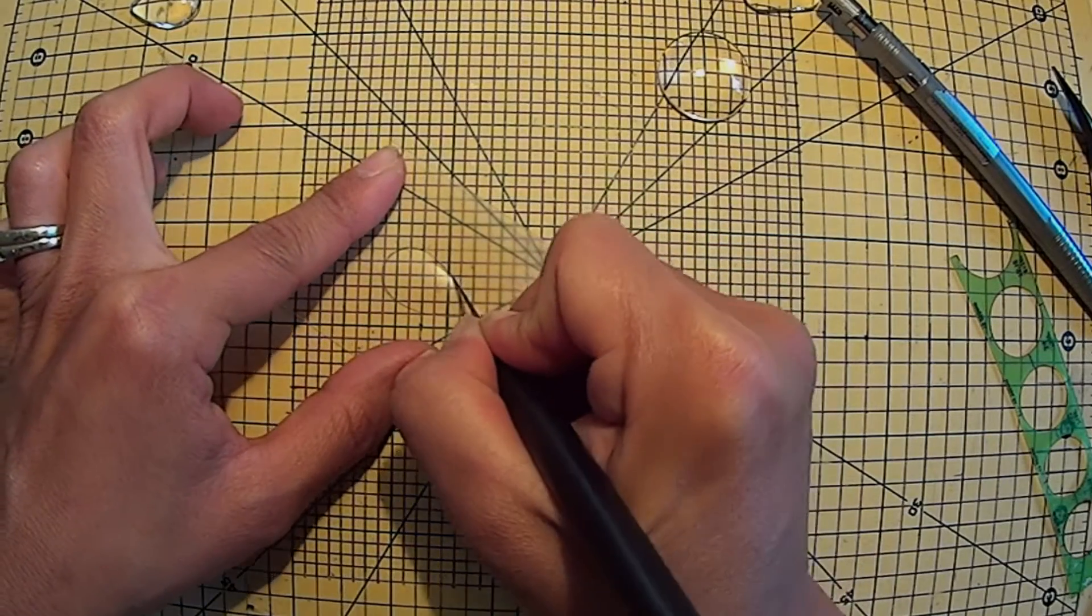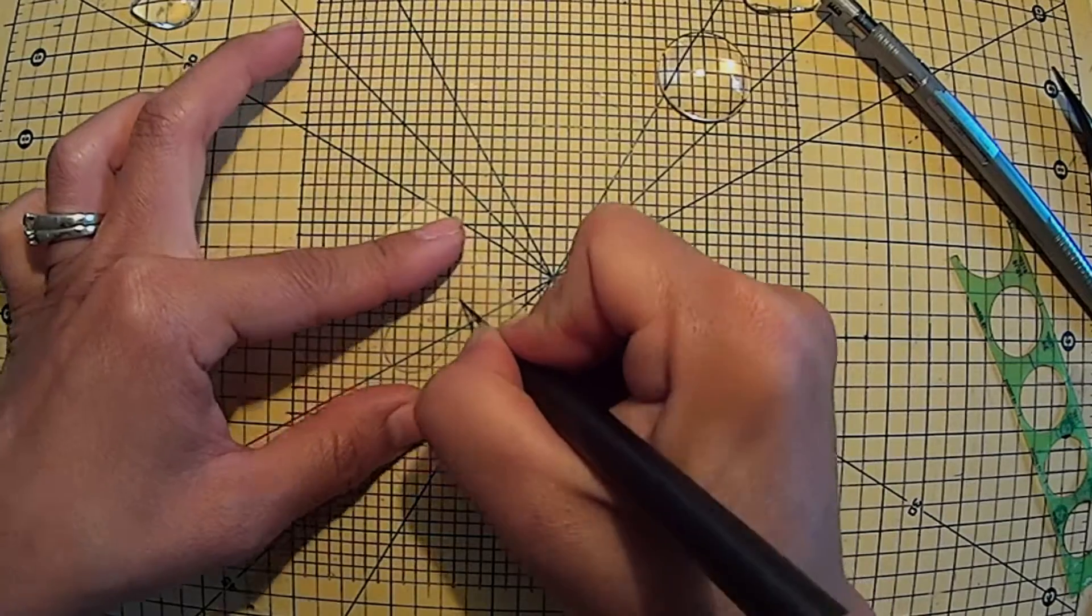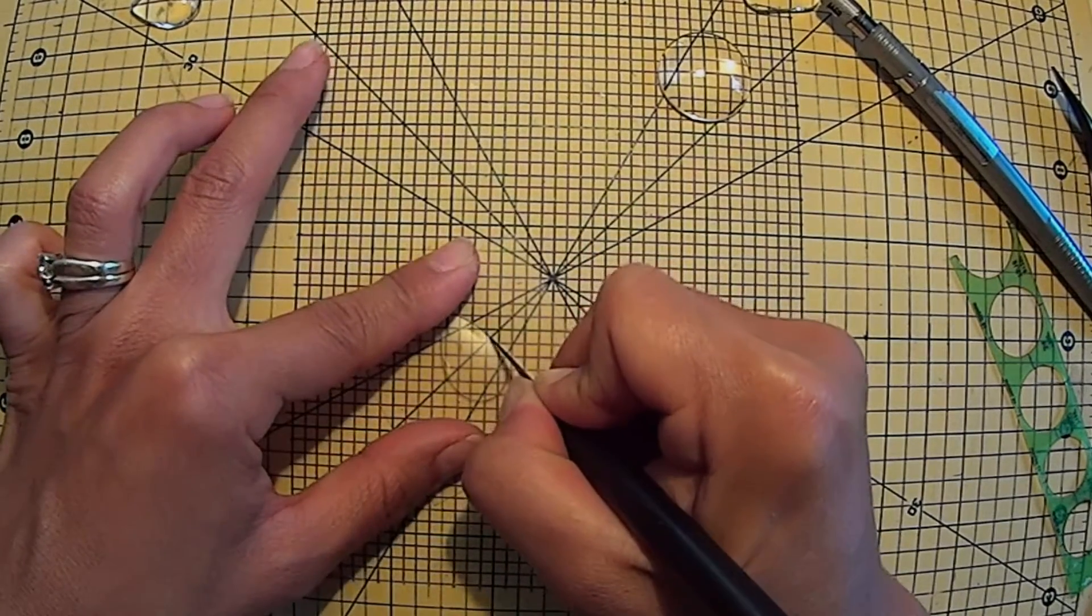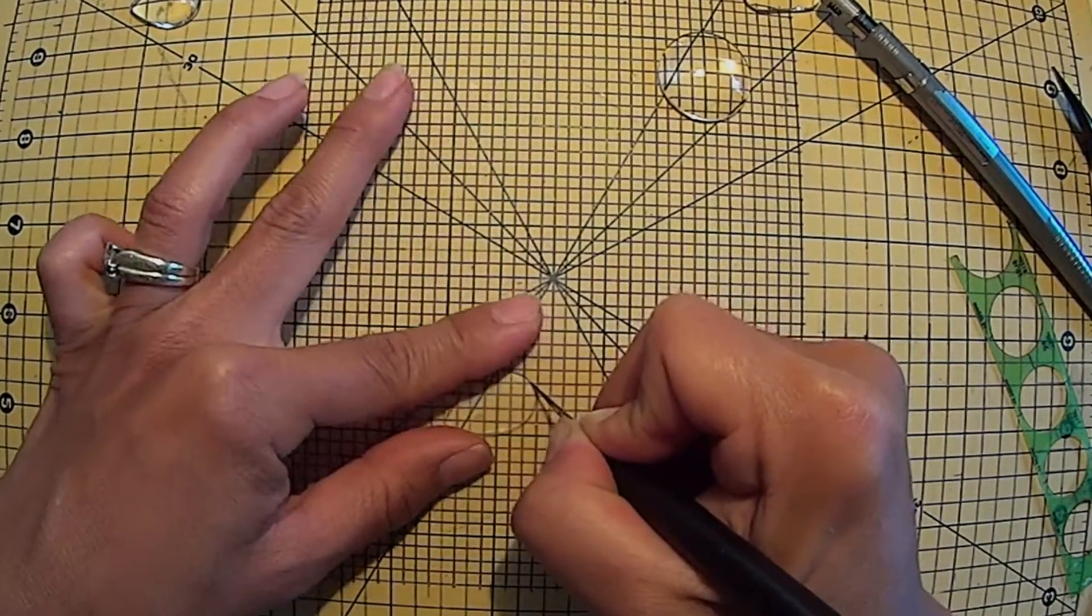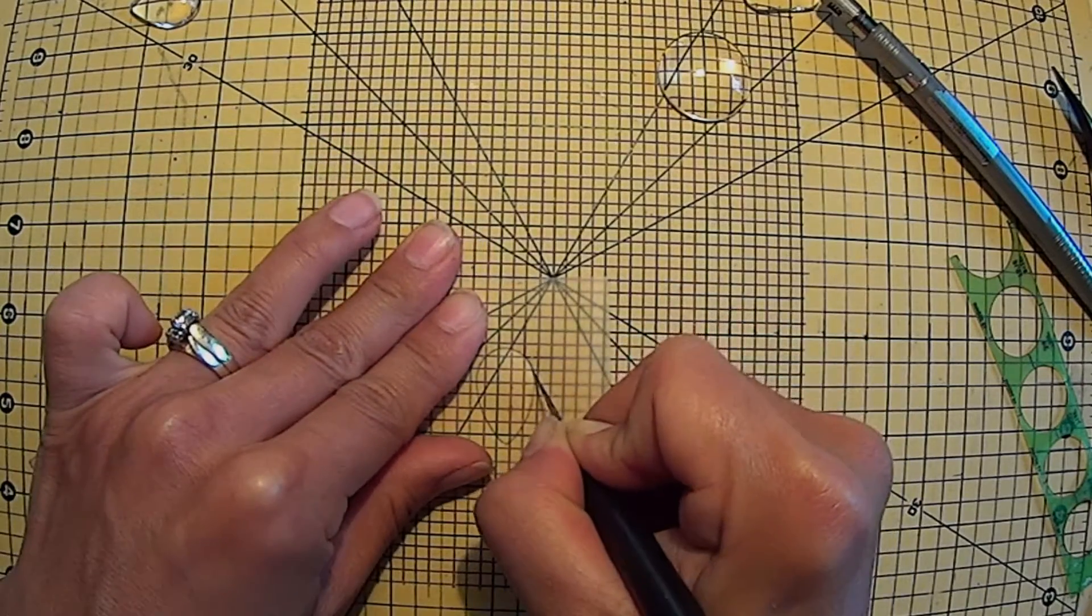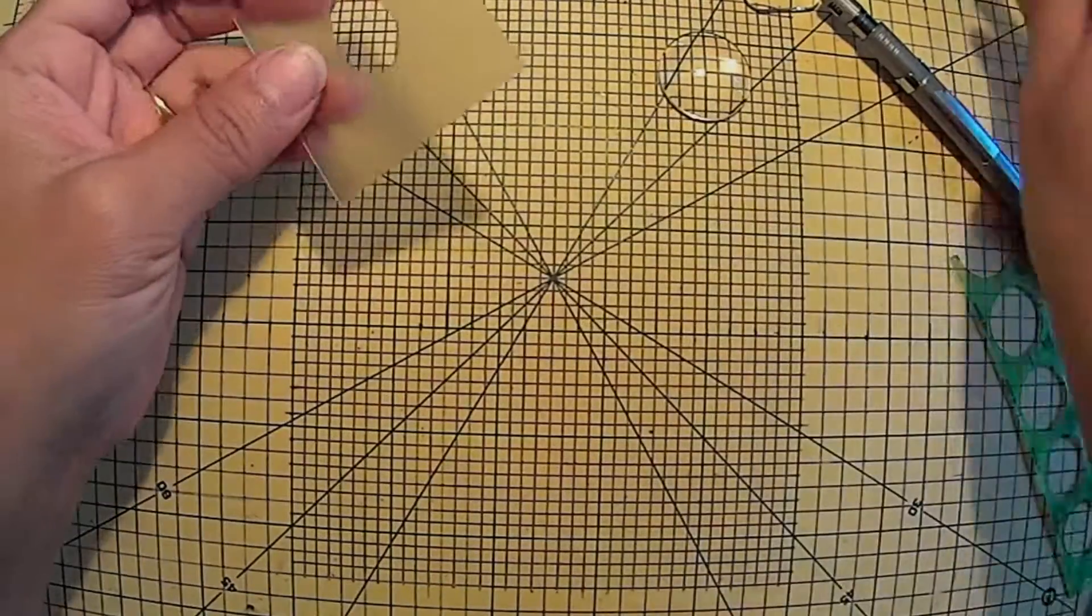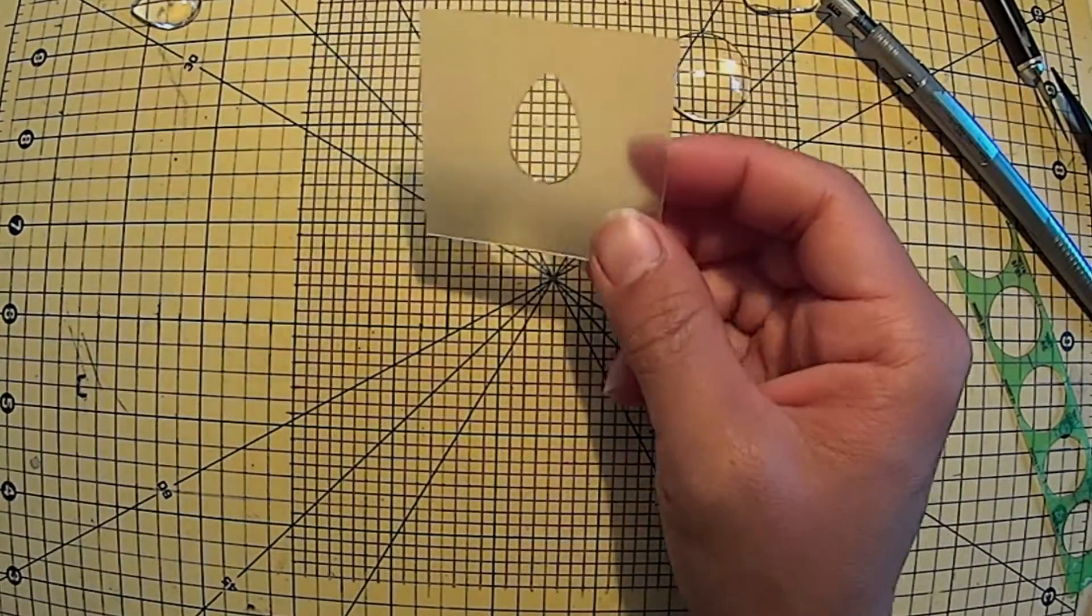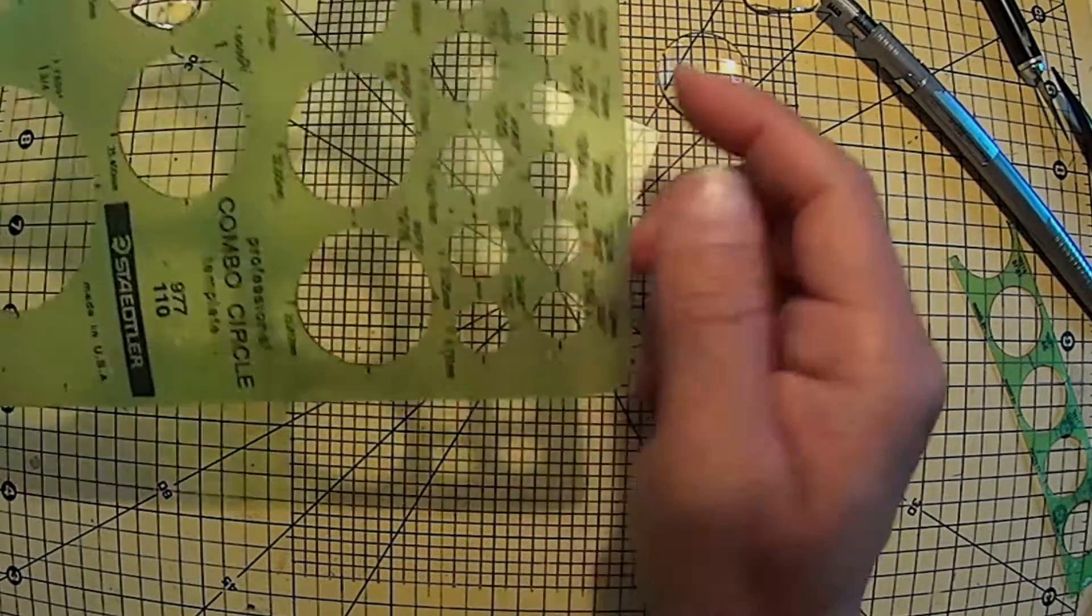Depending on how hard you press, you may have to repeat this a second time. Once you have cut through all the way, the inner piece should just pop out, and now you have a perfect homemade template for creating your jewelry that works just like the expensive templates that you can purchase in stores.